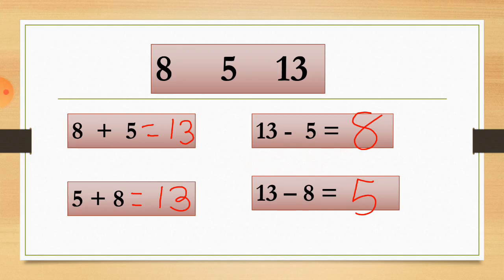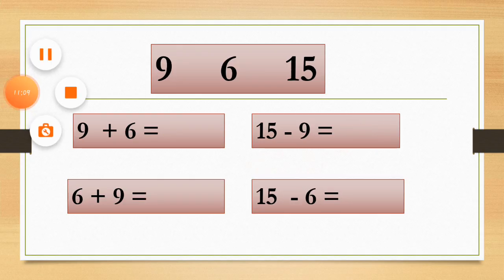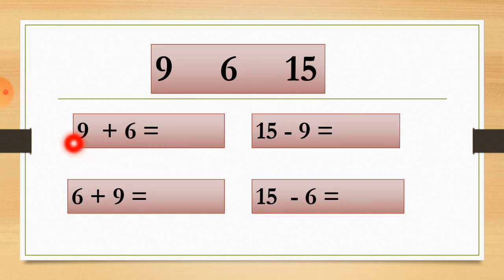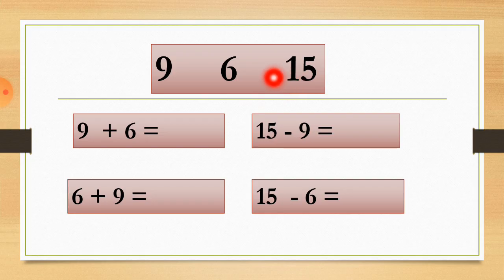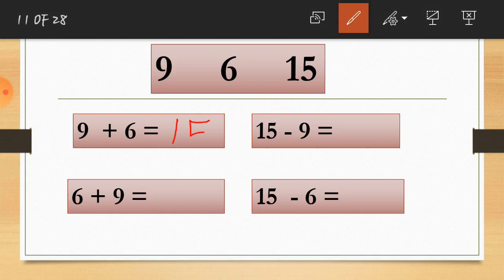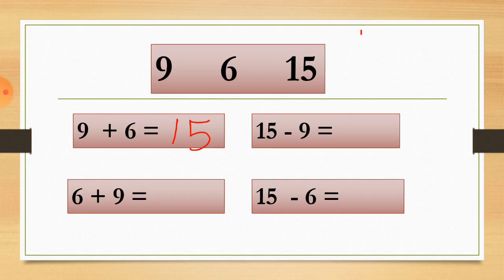Now let's do one sum with the shortcut method. Here are 9, 6 and 15. You can see which number is missing. 9 and 6 — 9 plus 6 gives a total — and 15 is the missing family number. Here is the addition of these two digits, 9 plus 6 equals 15. So this is the answer, and you can write 15 here.